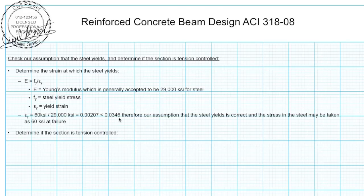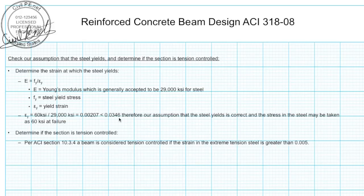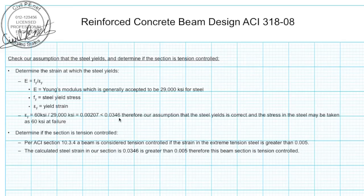Now we need to determine if this section is considered tension controlled by ACI. Per ACI section 10.3.4, a beam is considered tension controlled if the strain is greater than 0.005. We've got our strain at 0.0346, so it's much greater than 0.005. Therefore this beam section is considered tension controlled.